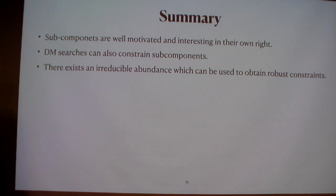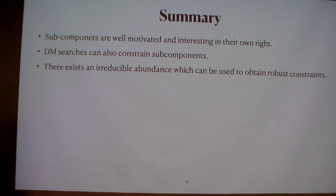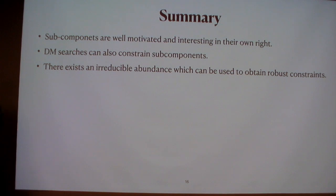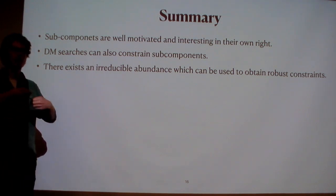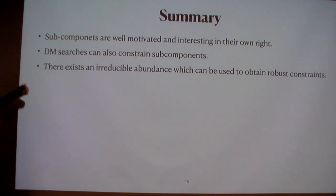To summarize the logic before getting into axions: subcomponents are well-motivated and interesting in their own right; dark matter searches can constrain these subcomponents directly without additional analysis; and there exists an irreducible abundance which can be used to obtain robust constraints, robust under any modifications to cosmology before BBN. BBN is Big Bang Nucleosynthesis — when the light elements such as hydrogen, helium, and deuterium are formed.